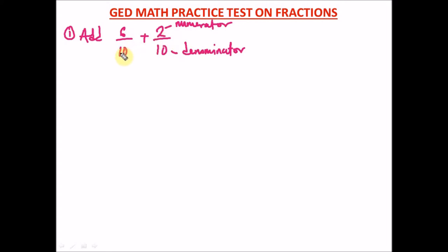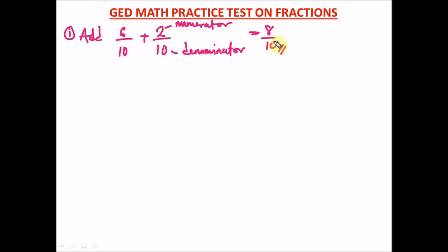When you want to add fractions, first check the denominators — are they the same value? If yes, it's straightforward: just say 6 plus 2, which equals 8, then keep the same denominator 10, giving you 8 over 10.